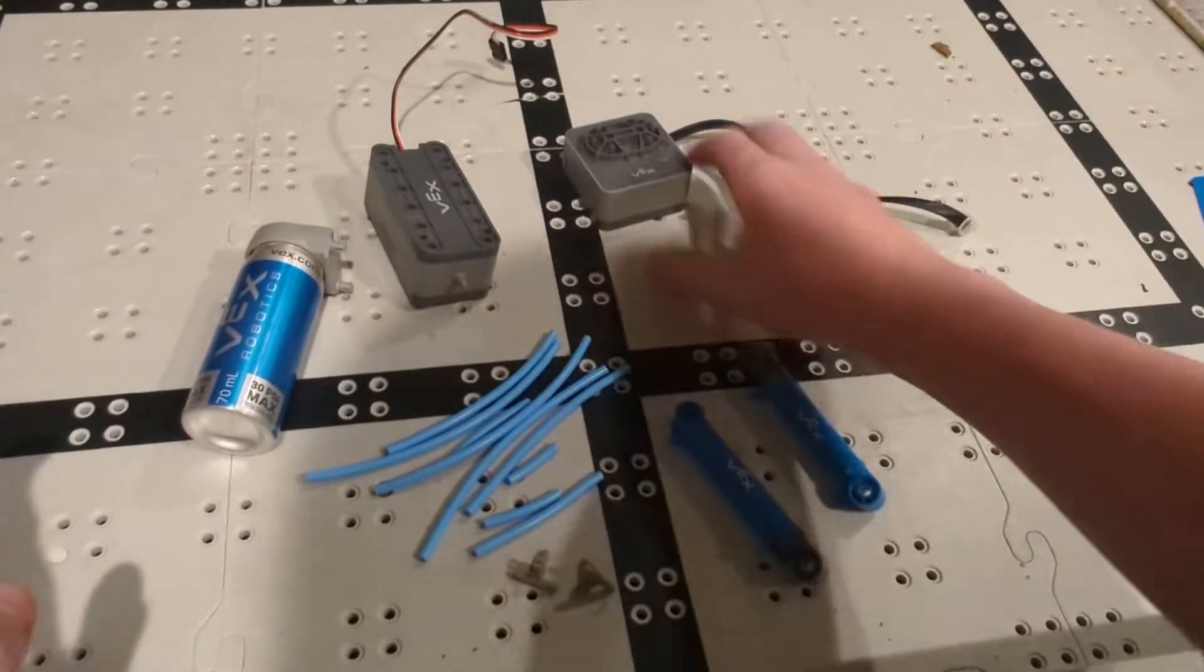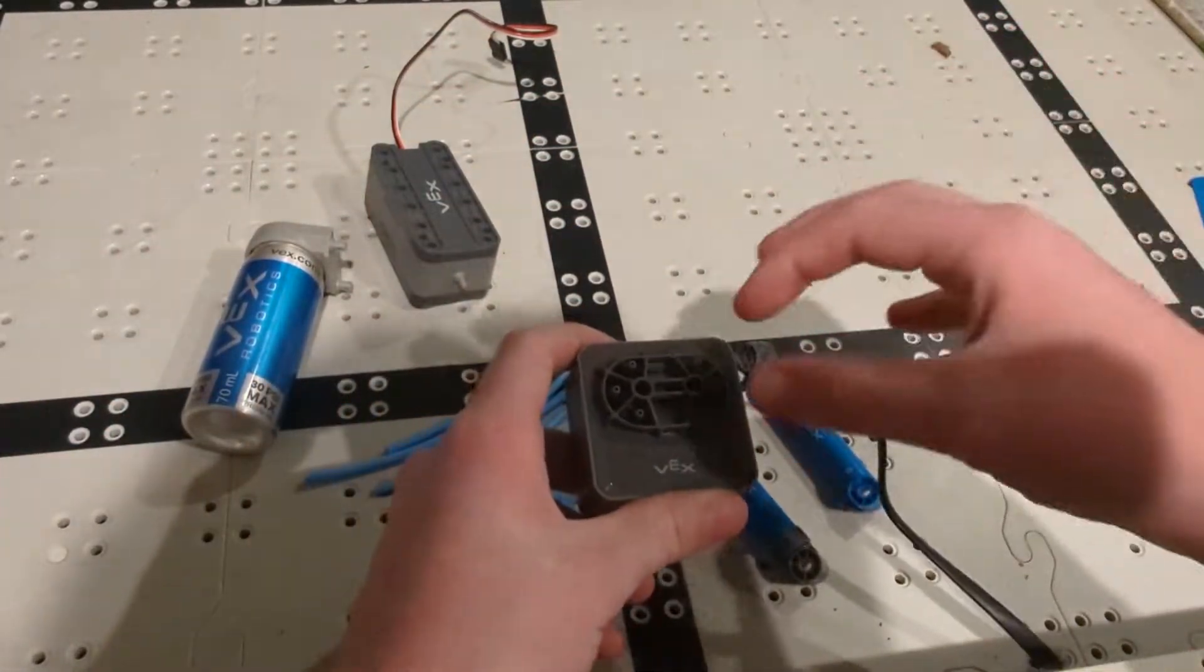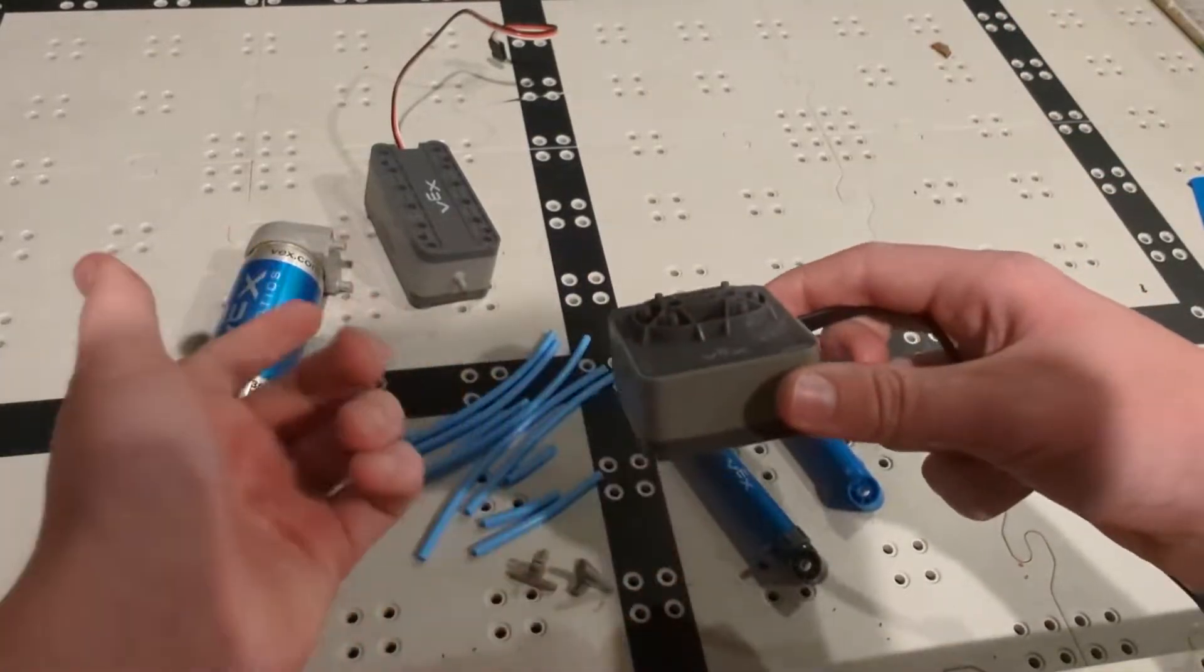So the first thing right here, this is the solenoid control. This basically lets the air come through and controls how the air moves.